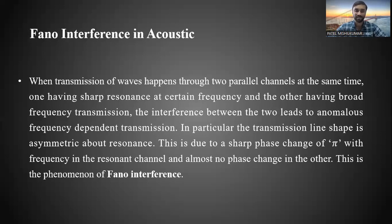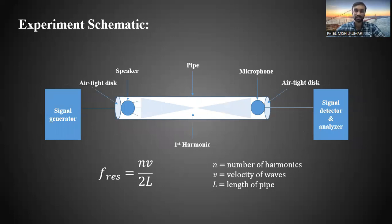Now let us see the experimental setup to study this phenomenon. I have given a schematic to make you guys understand how we will make a resonant channel. We need two channels to study this phenomenon: one is resonant channel and another is broad transmission channel, and then we will do the interference of both of them. First of all, we need to make a sharp resonance channel. For that, we can use a pipe. At one end we can connect a speaker and another end we can connect a microphone. But we need to make sure that both ends of the pipe are closed and the sound is not leaking outside and noise is not entering inside.